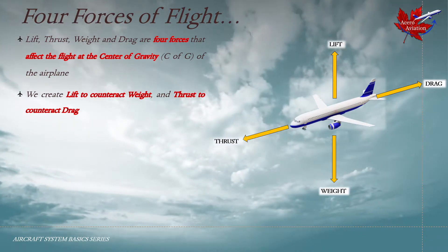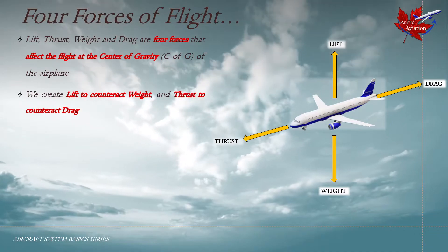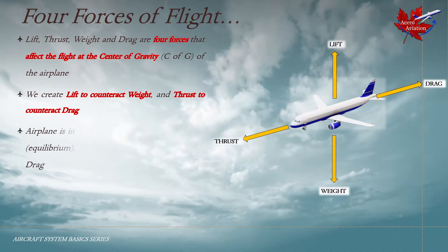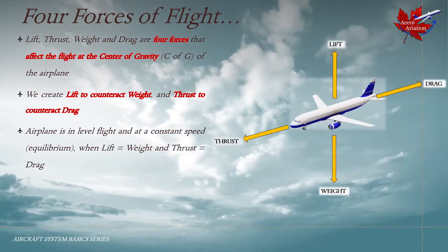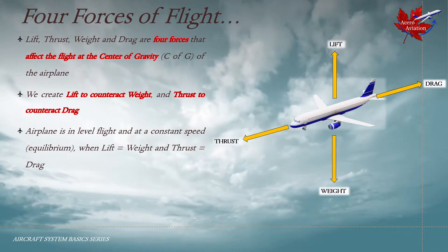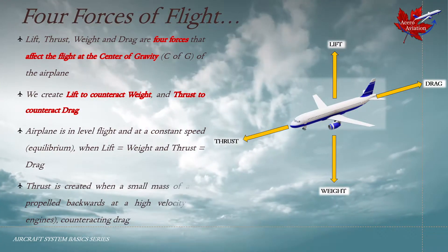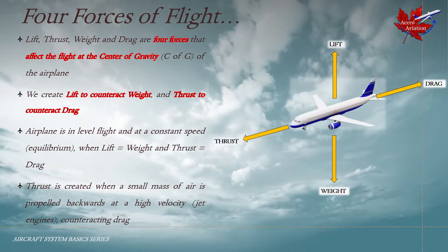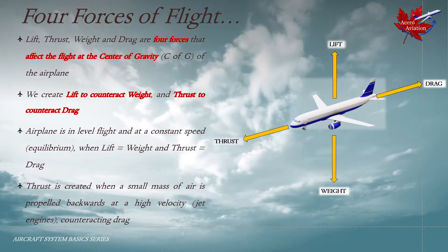The direction in which each force affects flight is shown by the direction of arrows in this graphic. The airplane is said to be at equilibrium in level flight at constant speed when lift equals weight and thrust equals drag. Thrust is created when a small mass of air is propelled backwards at a high velocity, counteracting drag.